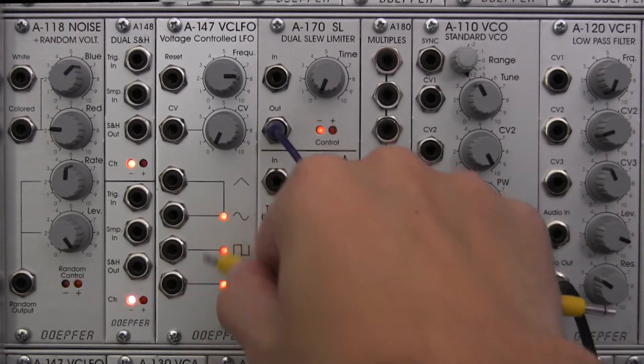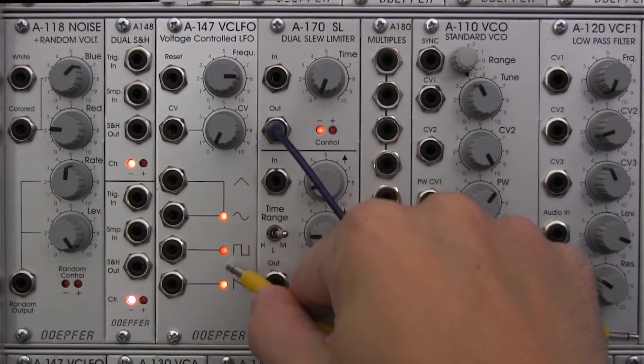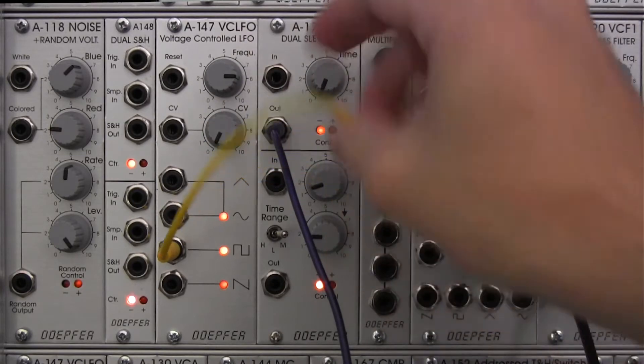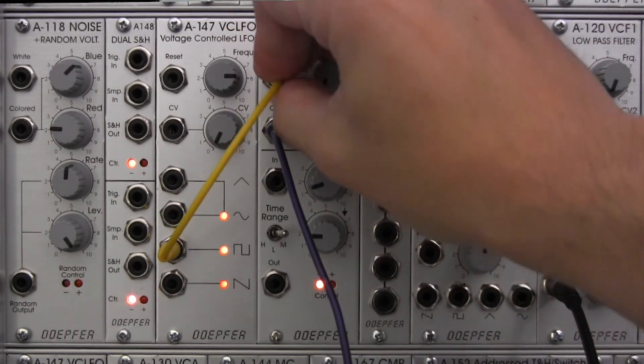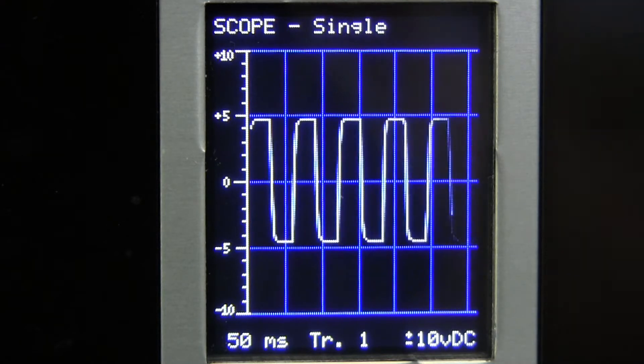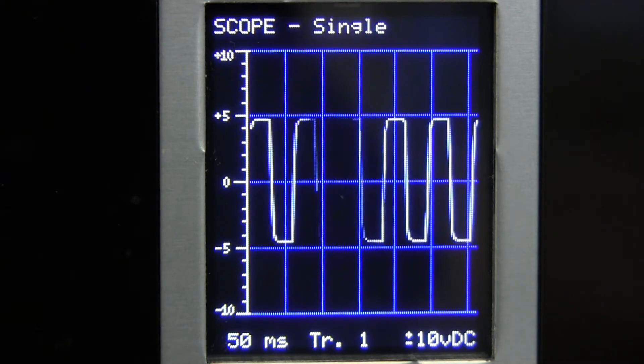We're going to take square wave out into our slew limiter. Slew limiter is at zero. And patch right in. Here we go. Let's look at our oscilloscope. So normal square wave, just what you'd expect.